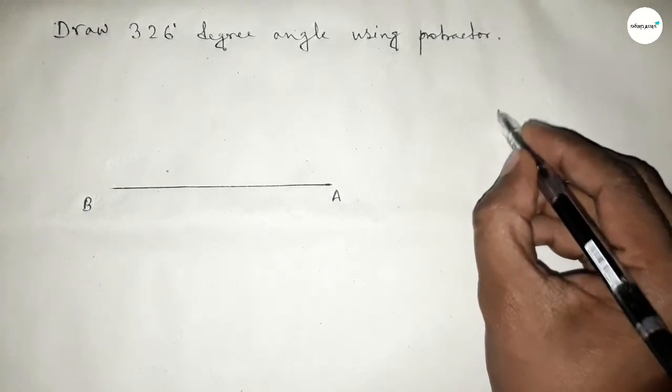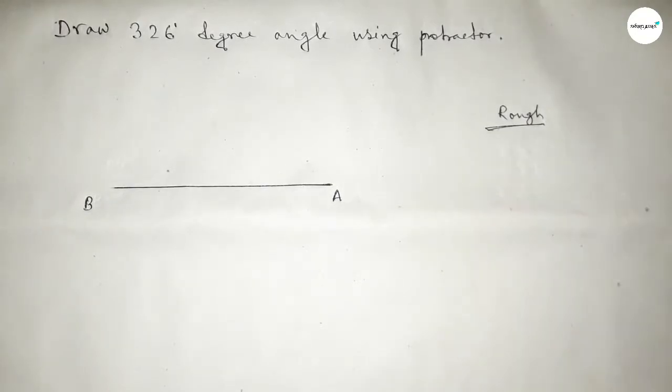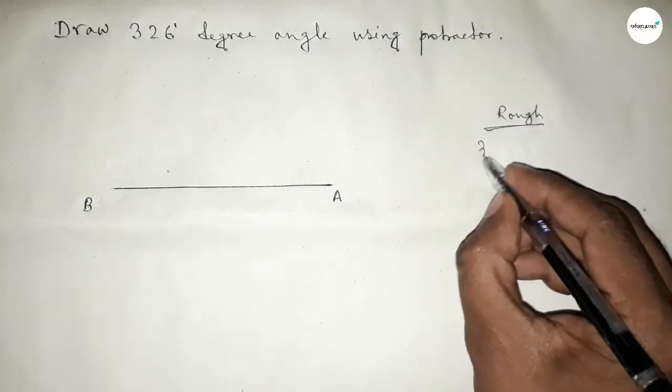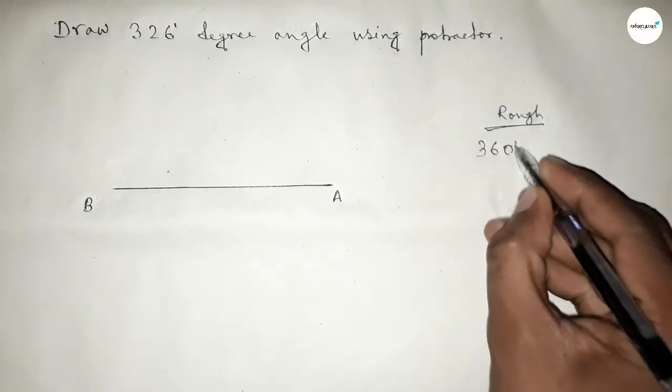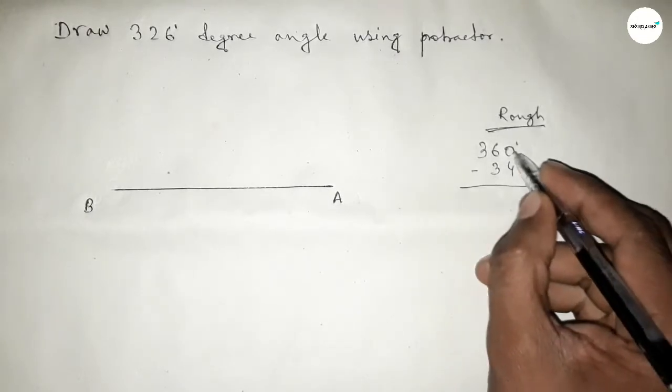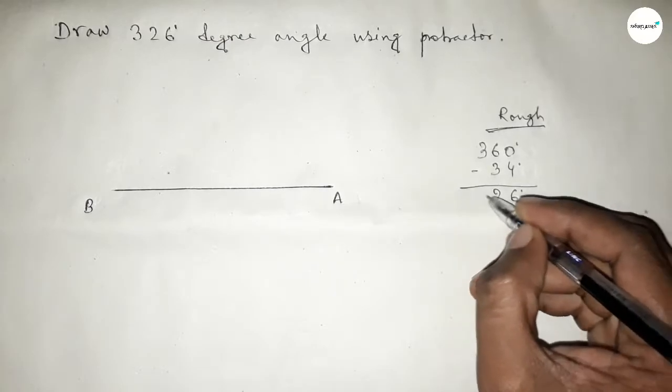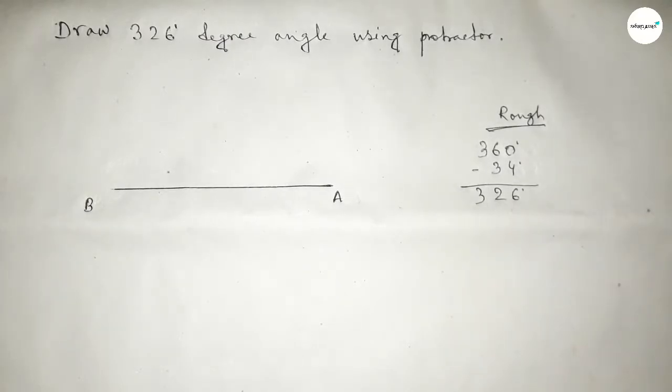Now roughly discussing some important calculation here. If we subtract 34 degrees from 360 degrees, then we can get 326 degrees. So subtracting 34 degrees: 360 minus 34 equals 326 degrees.